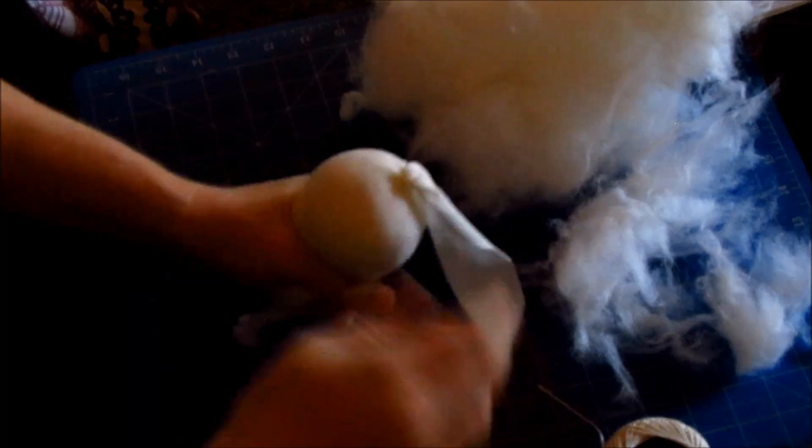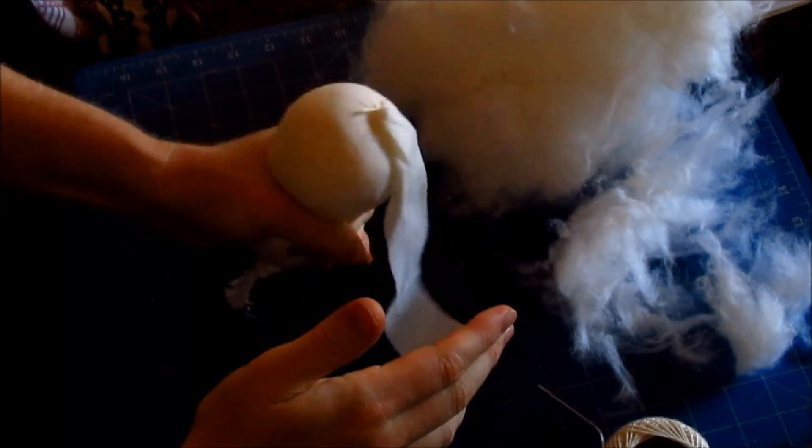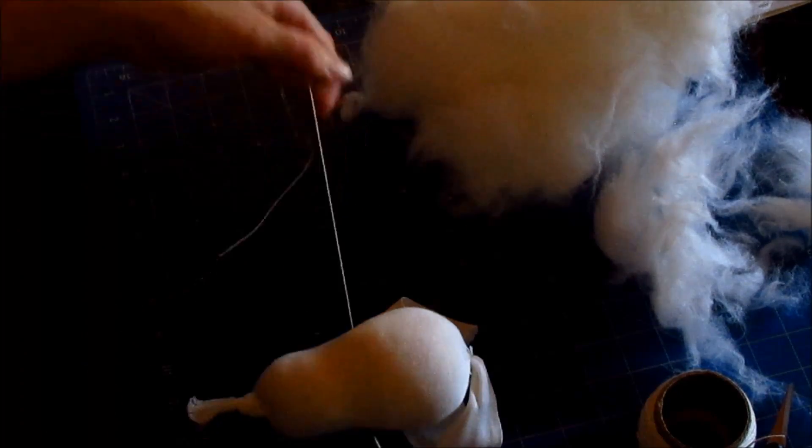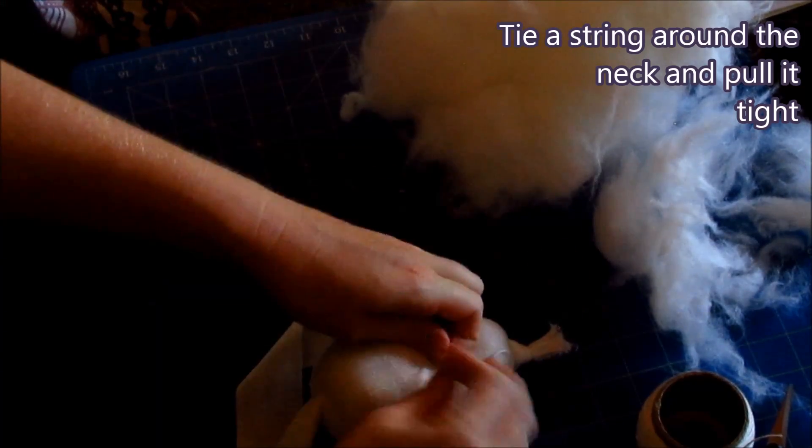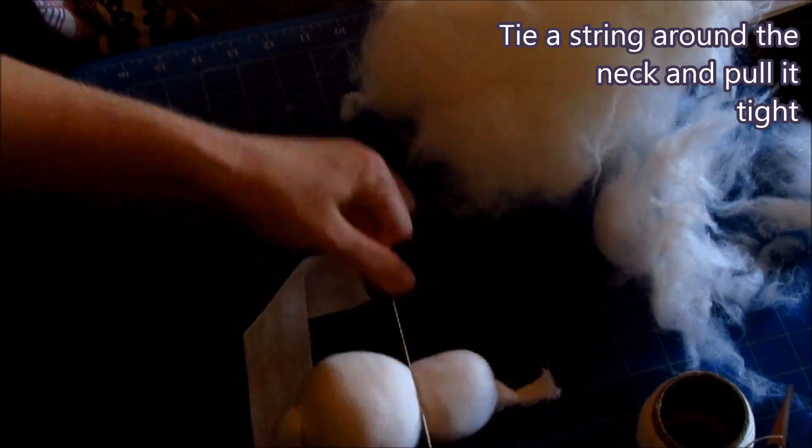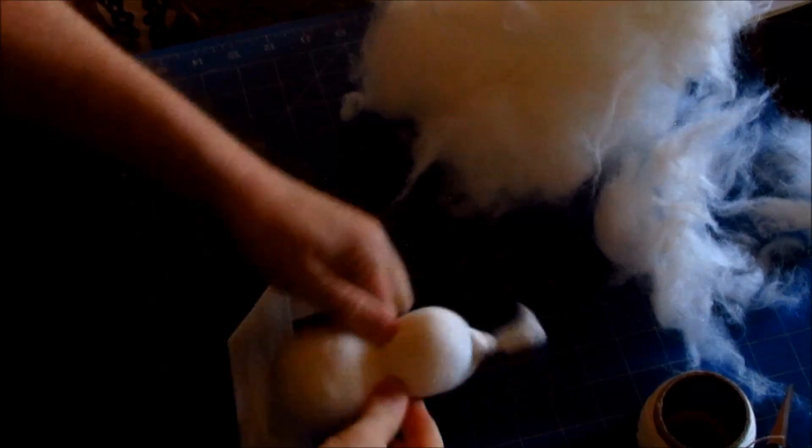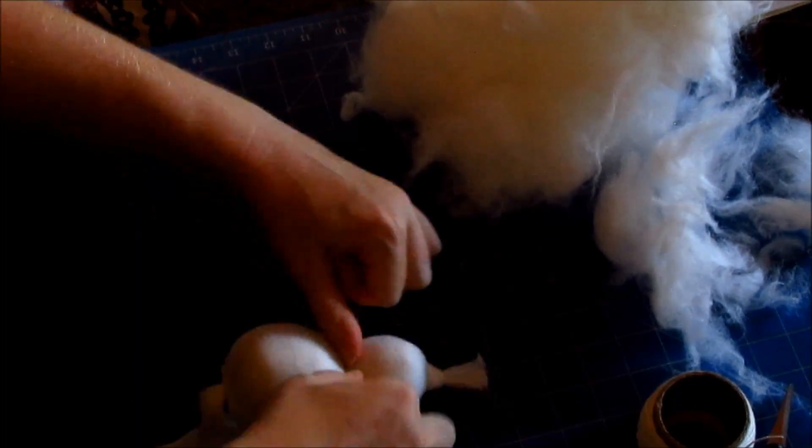Now determine which side you think is the prettiest for the front, for the face of the dolly, and then take a string and tie it around the neck and pull it really tight to make it strong and long lasting. I like to tie it around several times.